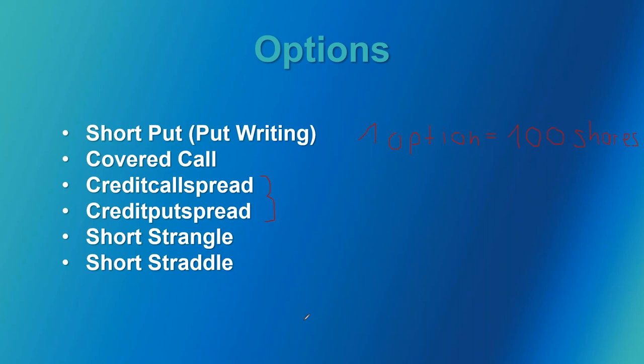Short straddle and short strangle are strategies I've added, but I wouldn't recommend them for beginners. A short straddle sells a call and a put option at the same strike price; a strangle uses different strike prices. For some indices this can work because indices don't have earnings gaps the way single stocks do, but I'll give some examples later.